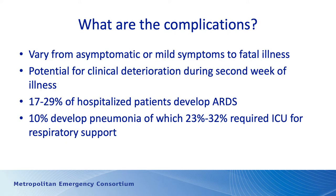What are the complications of this disease? Symptoms vary from mild or asymptomatic to fatal illness, with a mortality rate close to three percent. Patients have a propensity to deteriorate during the second week of illness — they may improve slightly the first week, then get sick again. Anywhere from 17 to 29 percent of hospitalized patients develop ARDS. About 10 percent develop pneumonia, of which about a third require ICU care for respiratory support. The potential for significant morbidity and mortality is real.